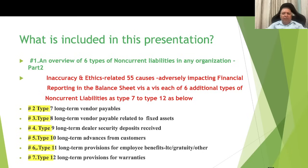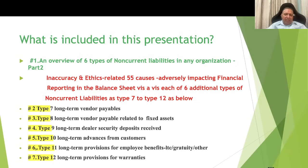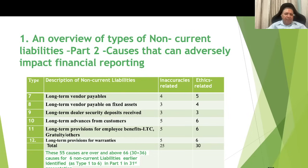In my 31st presentation, I covered six types of non-current liabilities, wherein 66 causes were identified. This presentation includes six additional non-current liabilities and covers inaccuracies and ethics-related 55 more causes for these six additional types, starting from type 7 to type 12 as listed in the summary on the next slide.